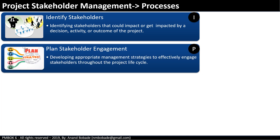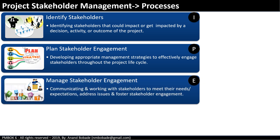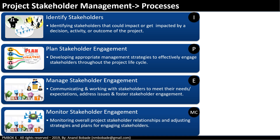Plan Stakeholder Engagement is under the planning process group. This is the process of developing appropriate management strategies to effectively engage stakeholders throughout the project life cycle. Manage Stakeholder Engagement is in the executing process group — this is the process of communicating and working with stakeholders to meet their needs and expectations, address issues, and foster stakeholder engagement. Finally, the fourth process is Monitor Stakeholder Engagement, under the monitoring and controlling process group. This is the process of monitoring overall project stakeholder relationships and existing strategies and plans for engaging stakeholders.